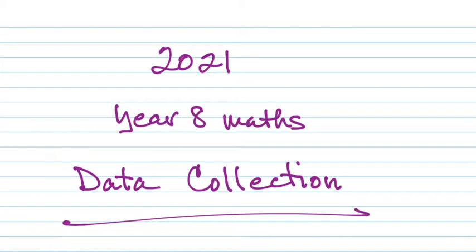Today we're going to talk about data collection — some ways you can collect different types of data, and some problems that you might have when you collect data. In this section, you're not only going to be finding information and reading mean, median, and mode. You're going to have to look at some data and see if there are issues or problems: how do you think the data was collected, and what would be the best way to collect data? Most of it is just going to be lists of terms and definitions, but then we're going to look at some questions about how you can use that information.